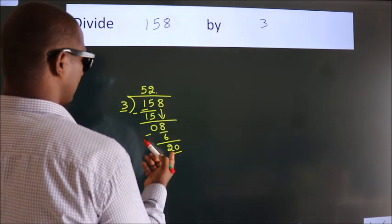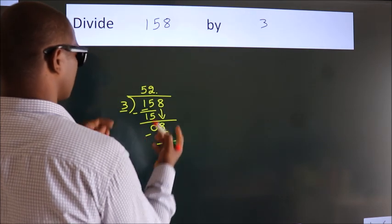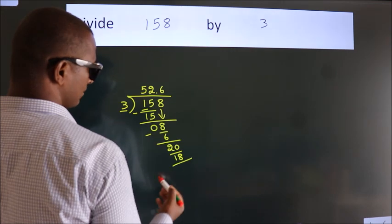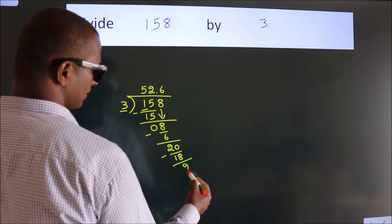A number close to 20 in 3 table is 3 times 6, 18. Now, we subtract. We get 2.